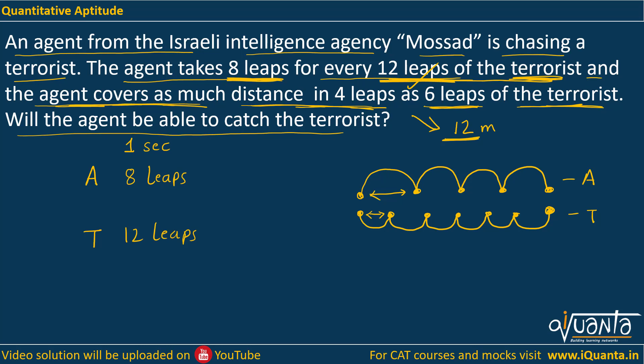In 4 leaps, the agent will cover 12 meters. In 6 leaps, the terrorist will cover 12 meters. So if I find the length of each leap: for the agent, he is covering 12 meters in 4 leaps, so 1 leap is 3 meters. Similarly for the terrorist, he is covering 12 meters in 6 leaps, so that is 2 meters per leap.